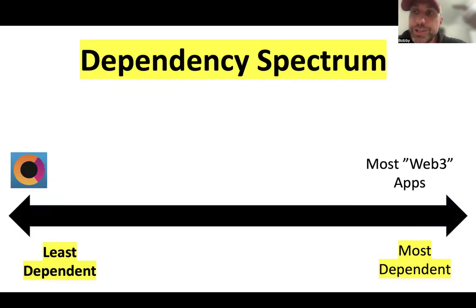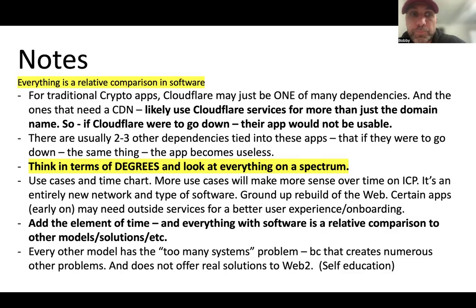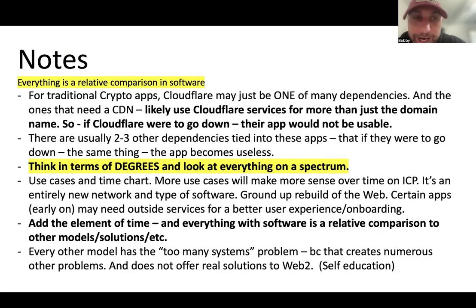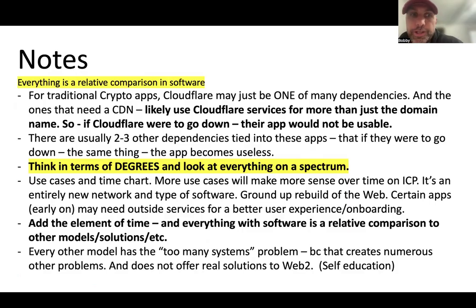For applications that truly need a content delivery network, they likely use Cloudflare services for more than just the domain name. So if Cloudflare were to go down, the app would not be usable at all. But with OpenChat, you could still access the application through the original canister ID. There are usually two to three other dependencies outside of a content delivery network tied into these applications, and if those go down, the app becomes entirely useless because they're entirely dependent on outside providers — as opposed to just using outside providers for one minimal service to help with onboarding and user experience.